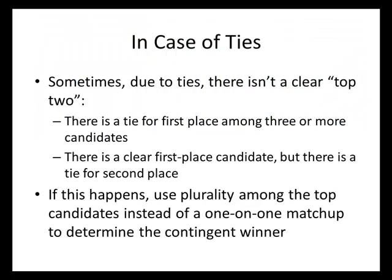What happens if there's a tie? Sometimes there isn't a clear top two. This can happen in two ways: either there's a tie for first place among three or more candidates, or there's a clear first place candidate but a tie for second place. If this happens, we can't use a one-on-one matchup, so instead we use plurality among those top candidates.